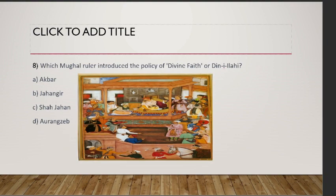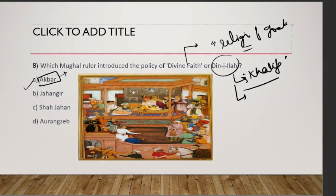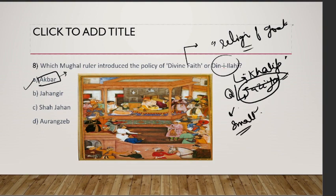Which Mughal ruler introduced a policy of Divine Faith, or Din-i-Ilahi? You can also call it the Religion of God. This was also brought by Akbar — all the religious tolerance policies are related to Akbar. It was a blend of teachings from different religions. Through this policy, Akbar declared himself a spiritual leader, also called Khalifa. Under this policy, he abolished the Jizya tax that non-Muslims had to pay. However, he could not propagate it well, and only a small handful of people followed Din-i-Ilahi.